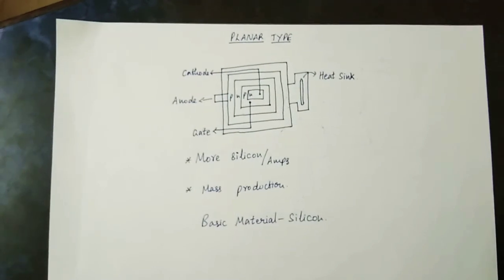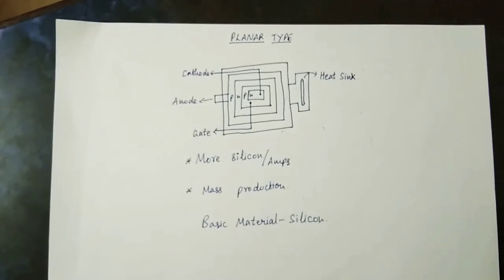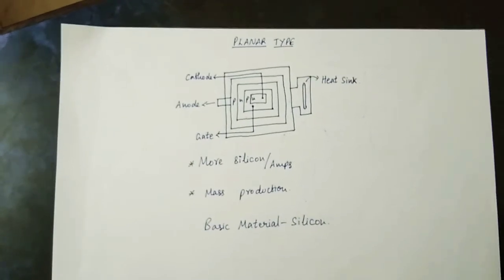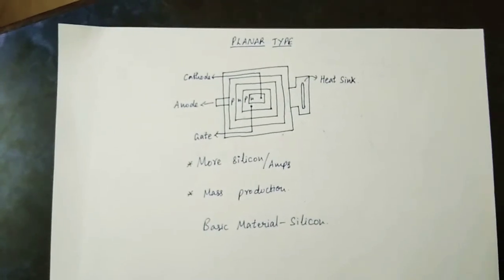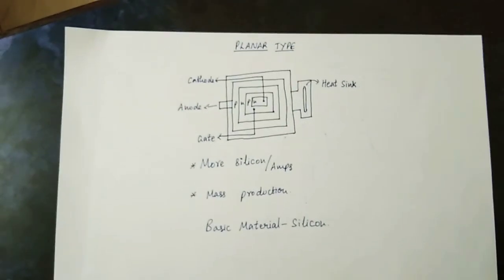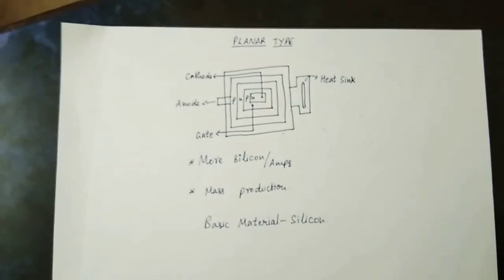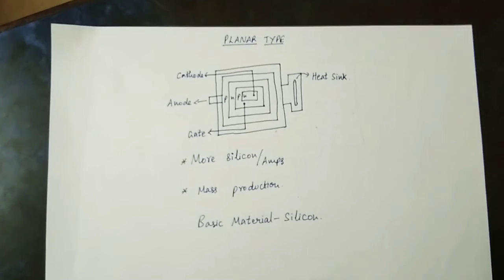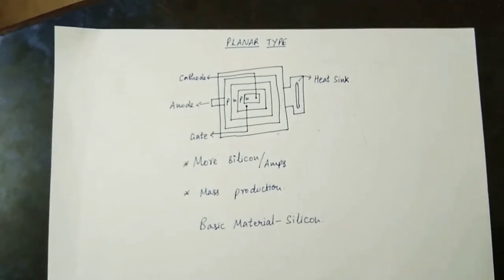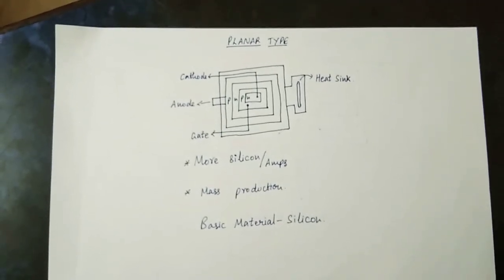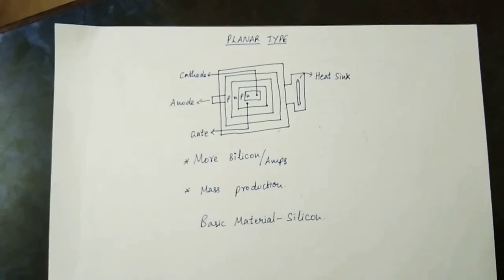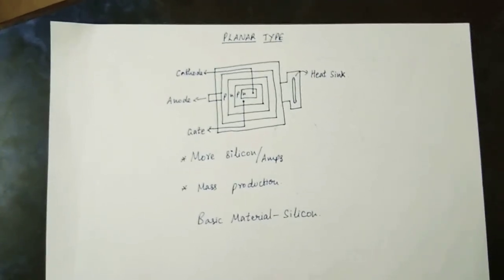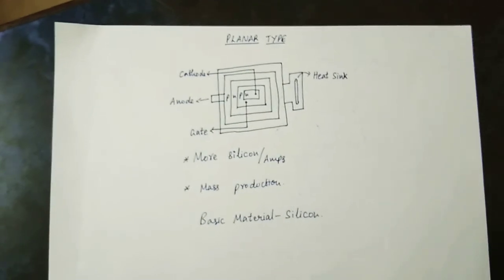As per the current process, the planar type uses silicon material. One disadvantage of the planar type is it is only silicon metal. If you have current protection, you can have the same type, but there is a disadvantage in terms of protection.